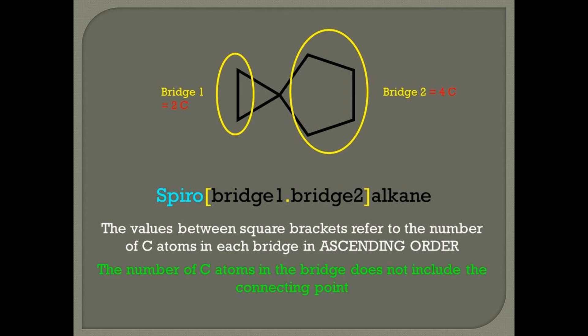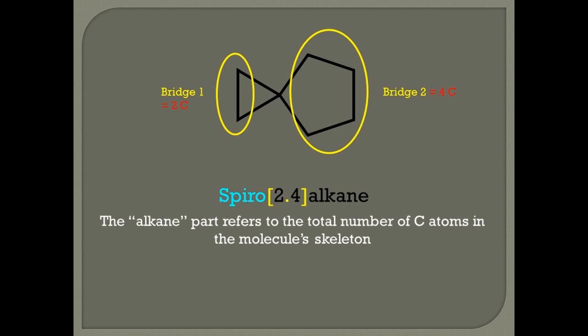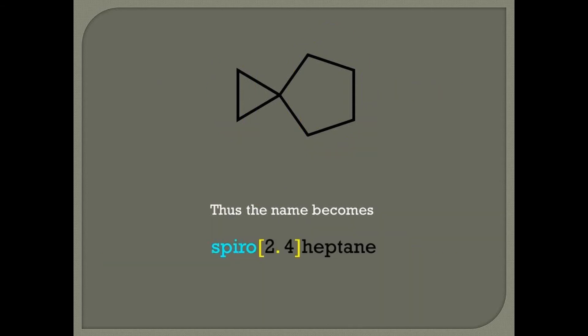The number of C atoms in the bridge does not include the connecting point. And therefore, the name becomes spiro, open square bracket, two dot four, close square bracket, alkane. And what is the alkane part? That's the total number of carbon atoms in this spirocyclic compound. Well, it's equal to the two bridges, four plus two, that's six, plus one atom for the connection point, that's seven, therefore it's a heptane. The final name becomes spiro two four heptane.